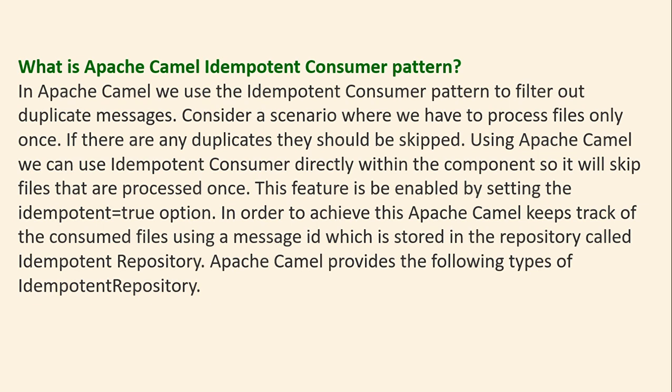What is the Apache Camel Idempotent Consumer Pattern? In Apache Camel, we use the Idempotent Consumer Pattern to filter duplicate messages. Consider a scenario where you have to process files only once — if there are any duplicates, they should be skipped. Using Apache Camel, we can use the Idempotent Consumer directly within the component so it skips files already processed, enabled by setting the idempotent=true option. Camel keeps track of consumed files using a message ID stored in the Idempotent Repository.